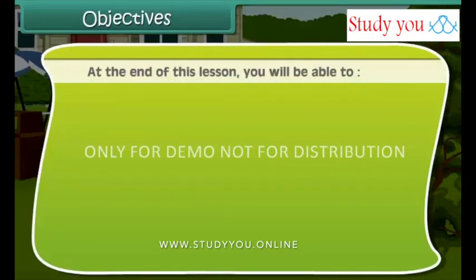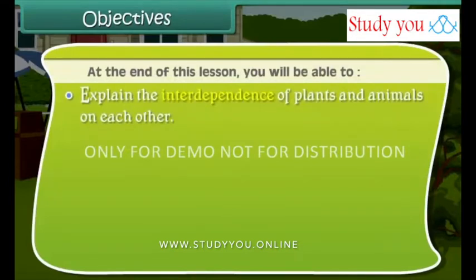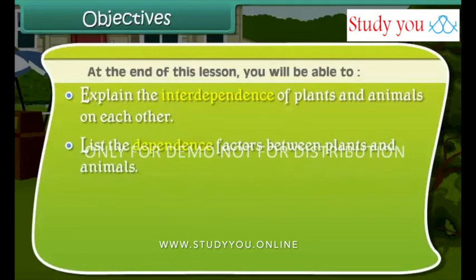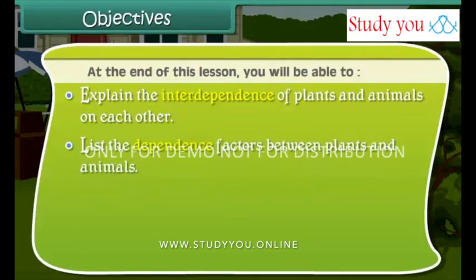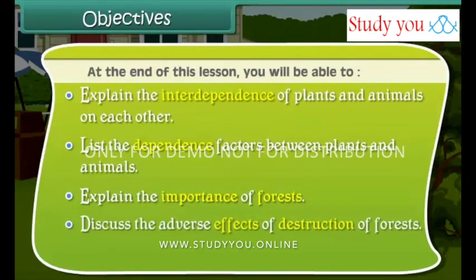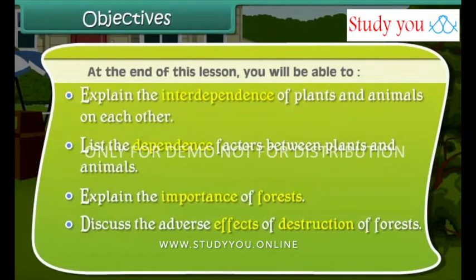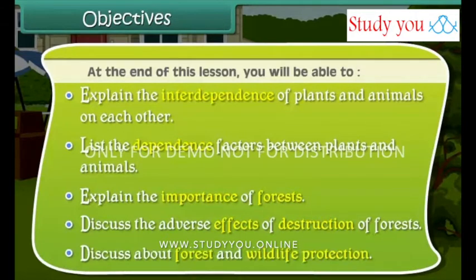At the end of this lesson, you will be able to: explain the interdependence of plants and animals on each other; list the dependence factors between plants and animals; explain the importance of forests; discuss the adverse effects of destruction of forests; and discuss forest and wildlife protection.